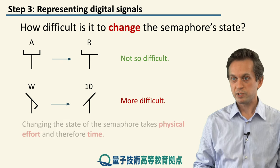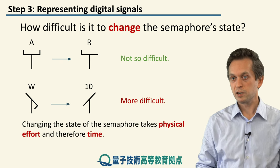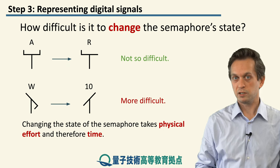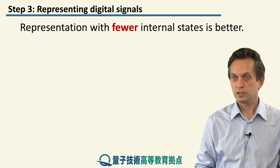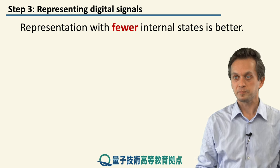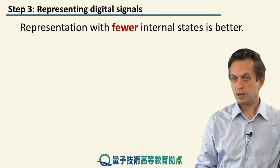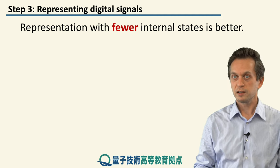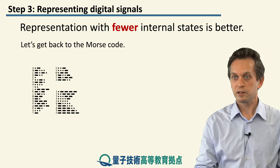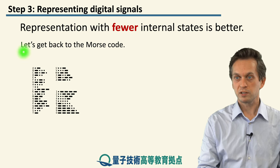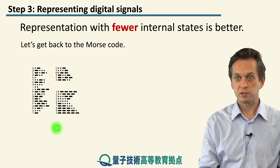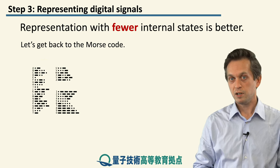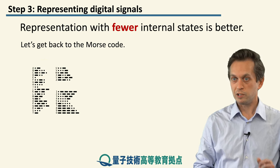A good representation for sending digital signals should require the least amount of effort possible to change the state of the digital signal. In this sense, it makes sense to have fewer internal states in order to produce a better encoding for the message. Such an example is Morse code. With Morse code, you only have two internal states: a short signal and a long signal.